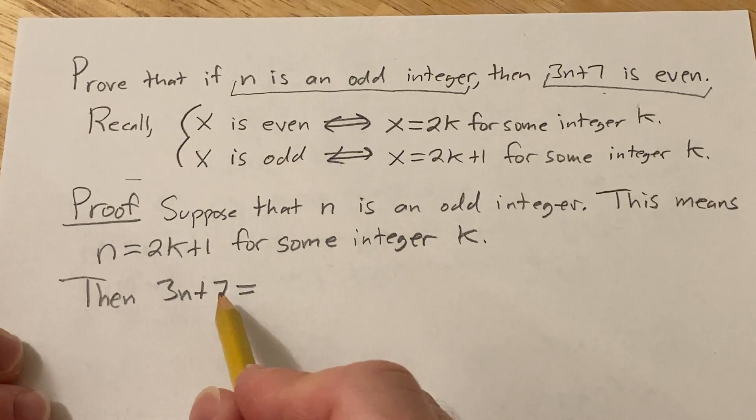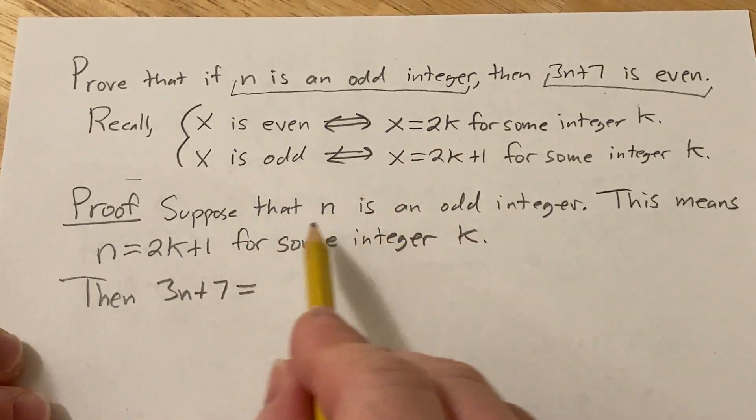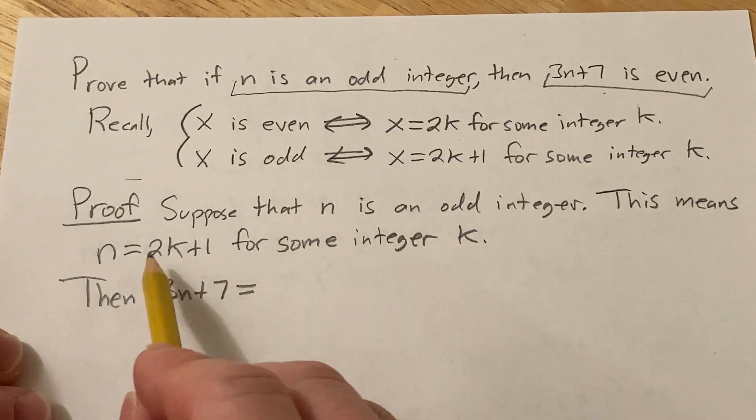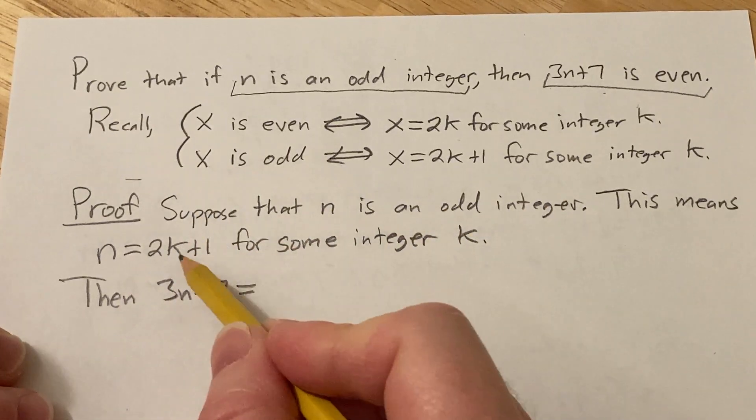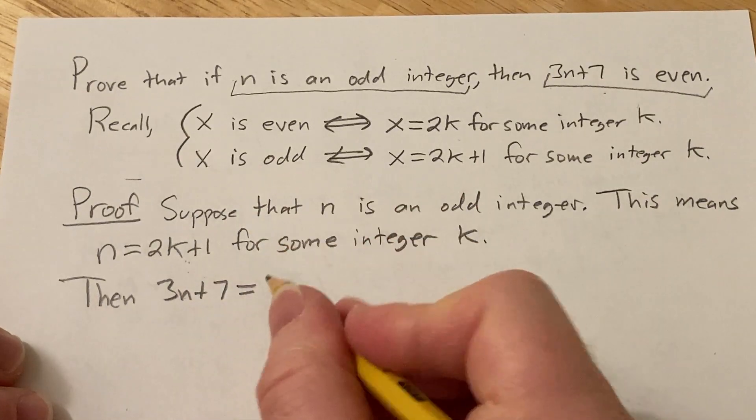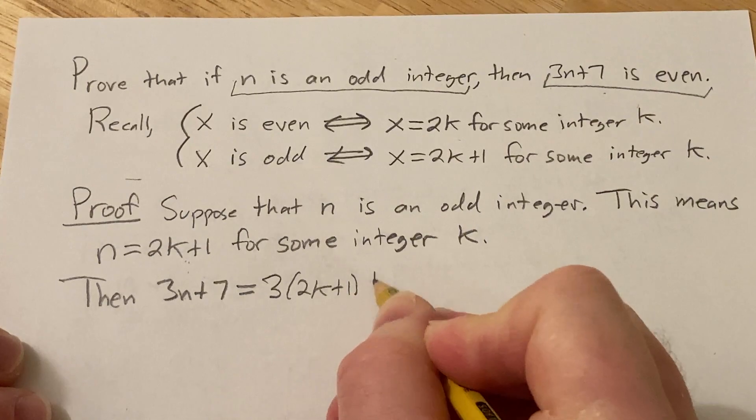So then 3n plus 7 is equal to, so now we're trying to show this is even, so we're trying to show it's 2 times a number. So we somehow have to use our knowledge that we've developed in our proof. So we know that n is equal to 2k plus 1, so we can replace the n with that. So this will be 3 times 2k plus 1 plus 7.